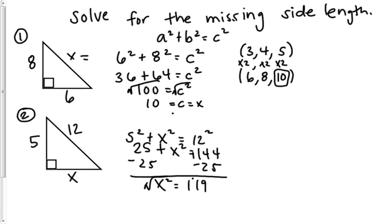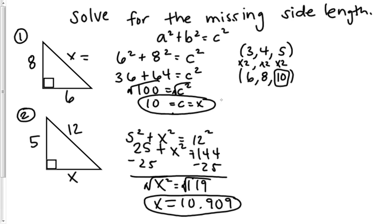So, the square root of 119, x is equal to 10.909. So, that is my answer for that one. And that is my answer for number 1.